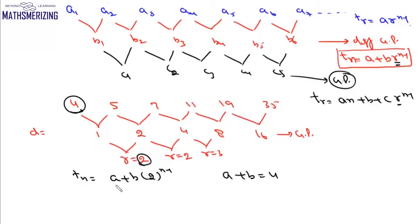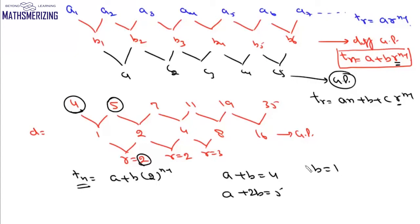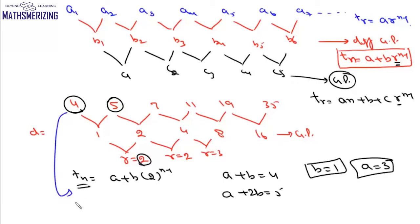Putting n = 2, we get a plus 2b, which equals the second term, 5. Subtracting, we get b = 1, and therefore a = 3. So the general term t_n for this series is 3 plus 2 to the power n minus 1.